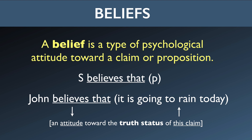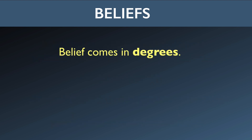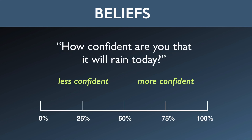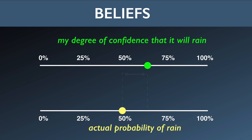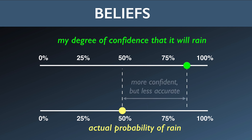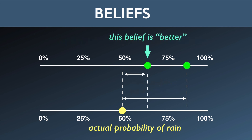Now because the strength of one's confidence comes in degrees, this implies that belief attitudes can come in degrees. I can be more or less confident that it'll rain today, which means that I believe more or less strongly that it'll rain today. This automatically gives us one suggestion for judging the quality of a belief. How does my degree of confidence that it will rain today compare with the actual chances of it raining today? All things being equal, the closer your degree of confidence is to the actual likelihood of rain, the better your belief is. And this indeed is one of the most important measures of belief quality.